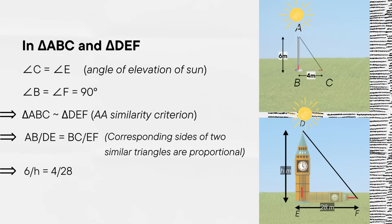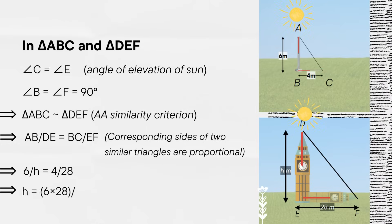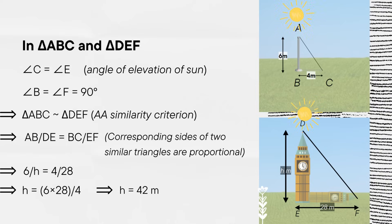That means 6 upon h is equal to 4 upon 28 or h is equal to 6 into 28 upon 4, that is h is equal to 42 meters.